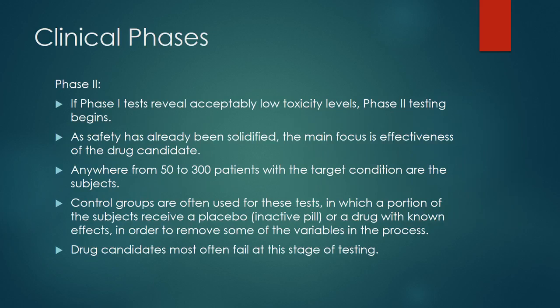If Phase 1 testing reveals acceptably low toxicity levels, Phase 2 testing can begin. The primary focus of this stage is finding out how effective the drug candidate is at fixing the problem. The tests are performed on volunteers who suffer from the target condition, and there can be anywhere from 50 to 300 subjects. Testers also use control groups, in which some subjects receive a placebo, or inactive, pill. This is done because sometimes people think they have been given real medicine and begin to feel better even though the drug was not real — this is known as the placebo effect, and the control tests are used to eliminate that variable. Most drug candidates that fail, fail at this stage.